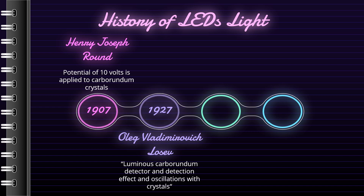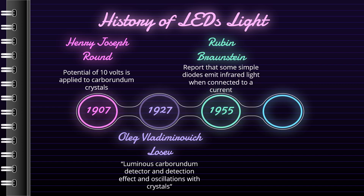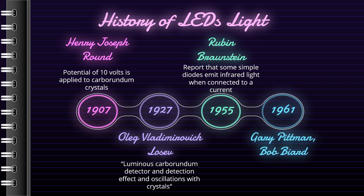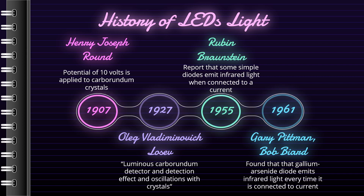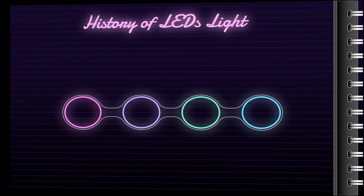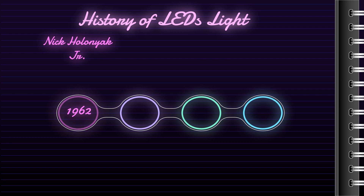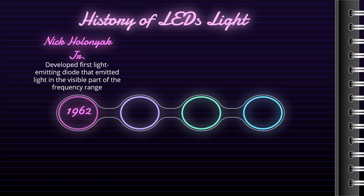For decades, no progress was made for different reasons. Ruben Bronstein, who worked at Radio Corporation of America, reported in 1955 that some simple diodes emit infrared light when connected to a current. In 1961, Gary Pittman and Bob Beard from Texas Instruments found that a gallium arsenide diode emits infrared light every time it is connected to current. The same year they received a patent for infrared LED. In 1962, Nick Holiniak Jr., employed at General Electric, developed the first light-emitting diode that emitted light in the visible part of the frequency range. It was a red LED.